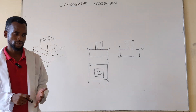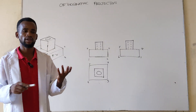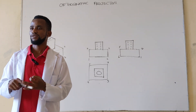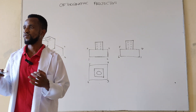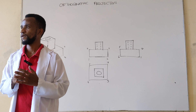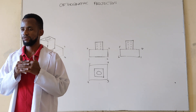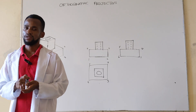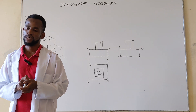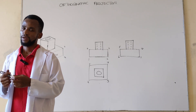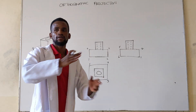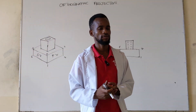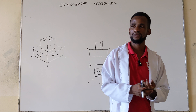We are going to look at different types of projections — we have what we call first angle and third angle projection. In the next lesson we will cover all those, and then the next one we can look at what to consider when converting from one view to another — very simple principles.